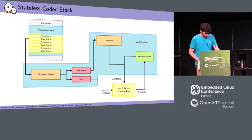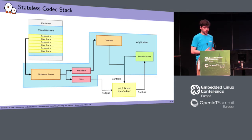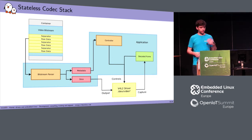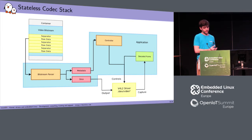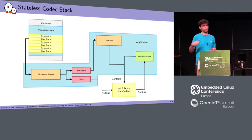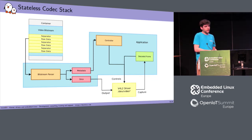With the Request API, the updated stack now has your container and video bitstream with raw data fed by your application, which then feeds slices and modifies controls based on metadata to the V4L2 driver. The driver gives back a decoded frame which you keep for use as a reference for later frames. Only the decoding part is now in Linux kernel; everything else is in user space.